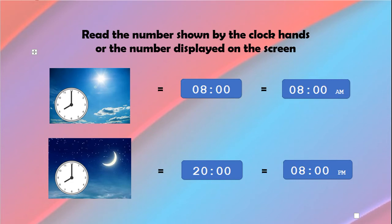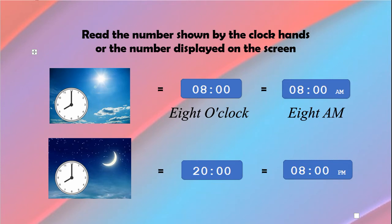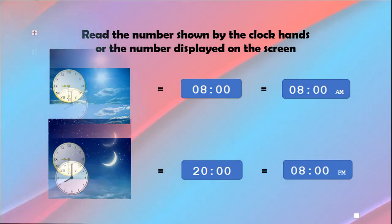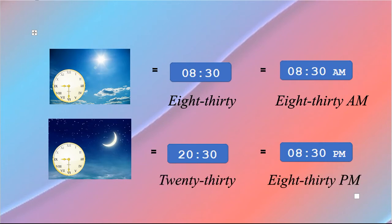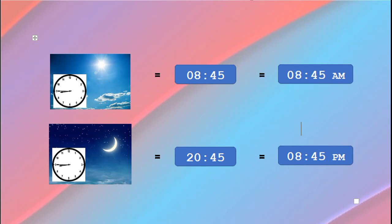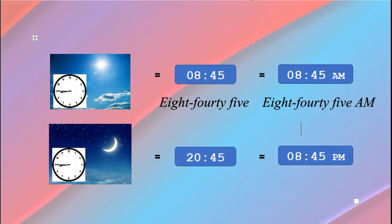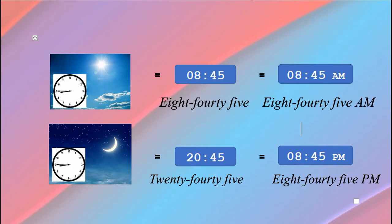Contoh selanjutnya: jam 8 tepat di pagi hari disebut 8 o'clock atau 8 AM. Jam 8 tepat di malam hari sama dengan 8 PM. Jam 8:30 di pagi hari dibaca 8:30 atau 8:30 AM. Jam 8:45 di pagi hari dibaca 8:45 atau 8:45 AM, dan jam 8:45 di malam hari dibaca 20:45 atau 8:45 PM.